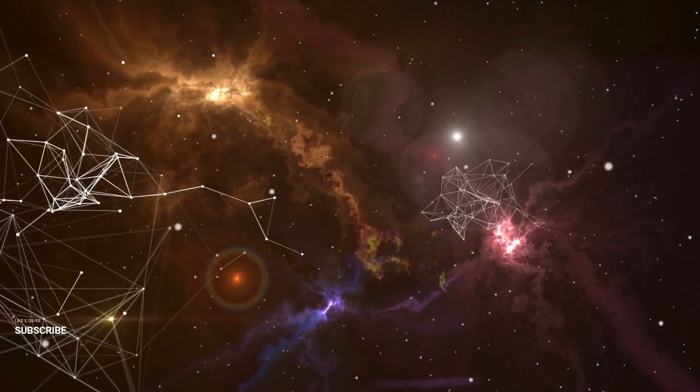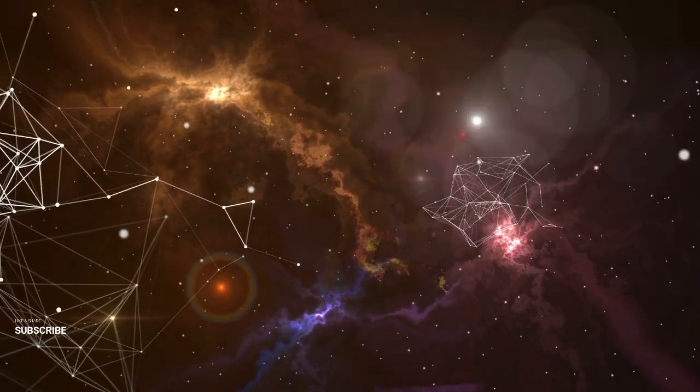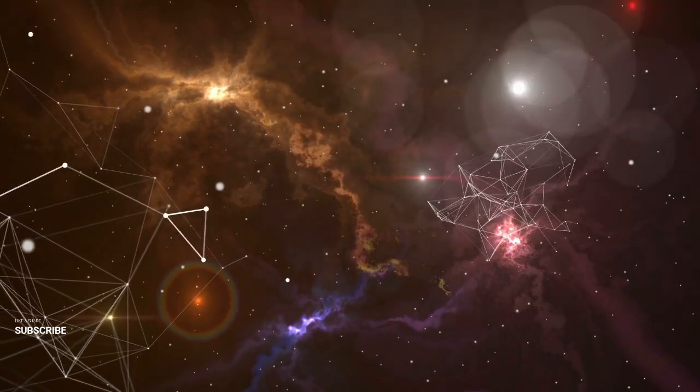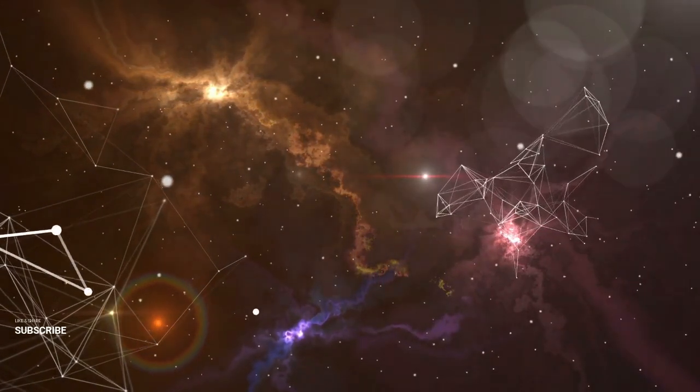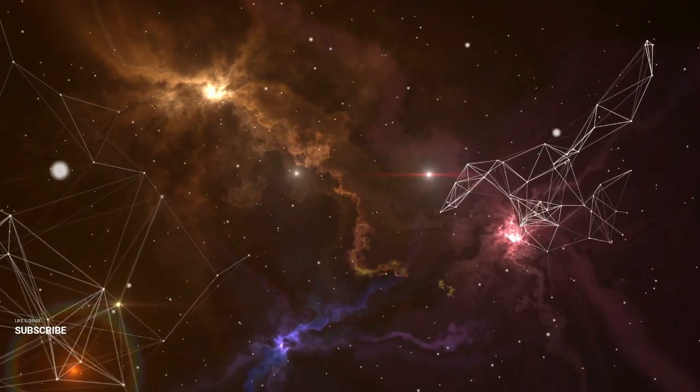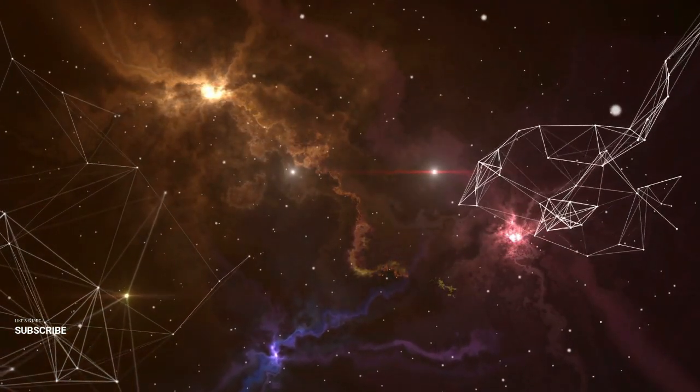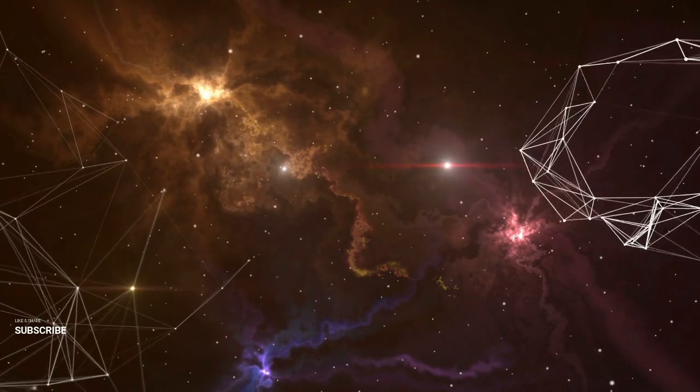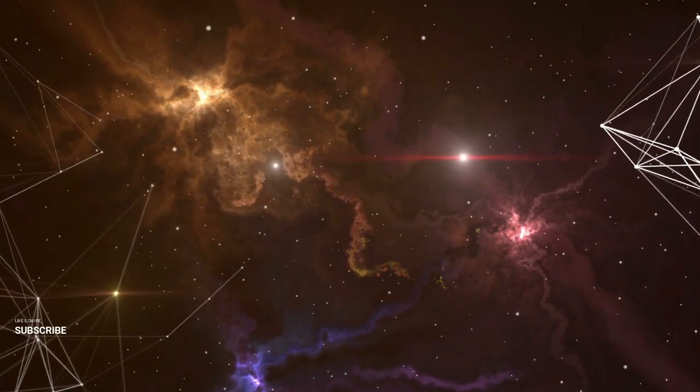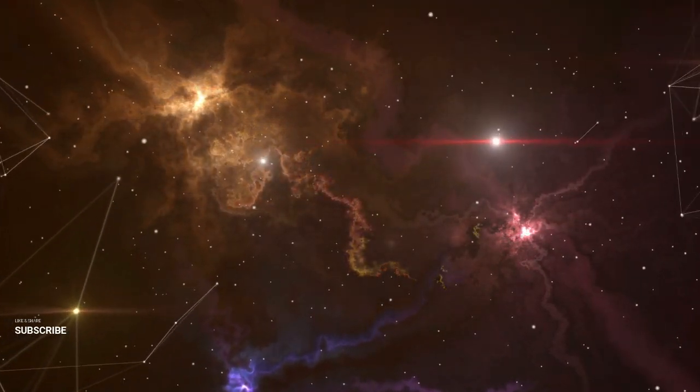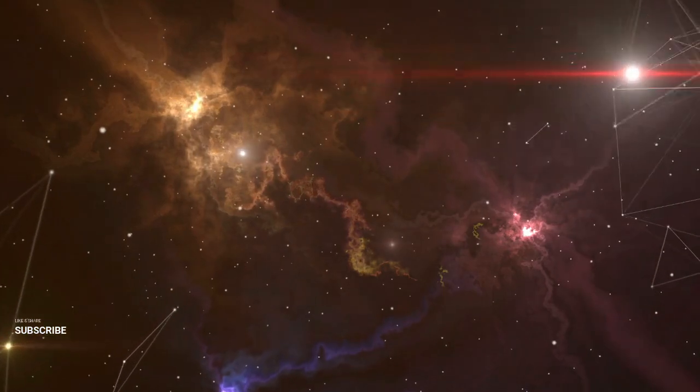Even more fascinating are galaxies caught in the act of transformation. For instance, objects like the Miles object showcase two galaxies mid-collision, capturing the exact moment a spiral galaxy is reshaping into a ring. These cosmic encounters reveal the extraordinary ways galaxies evolve, each collision leaving behind a unique and breathtaking masterpiece in the sky.